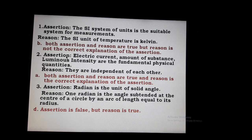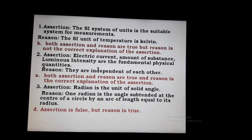Second assertion-reason question. Assertion: luminance and density are fundamental physical quantities. All seven fundamental quantities are independent — they do not depend on each other. This is correct. The reason states that fundamental quantities are independent of one another, which is also correct and is the right explanation. Both assertion and reason are true and the reason is the correct explanation of the assertion.